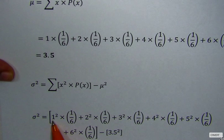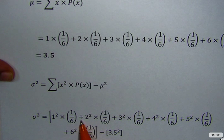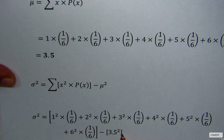So our first x is 1. So 1 squared times probability is 1 over 6 plus 2nd x is 2, so 2 squared times 1 over 6. This continues until the last one, 6 squared times 1 over 6. Then, we minus our mean squared is 3.5 squared.